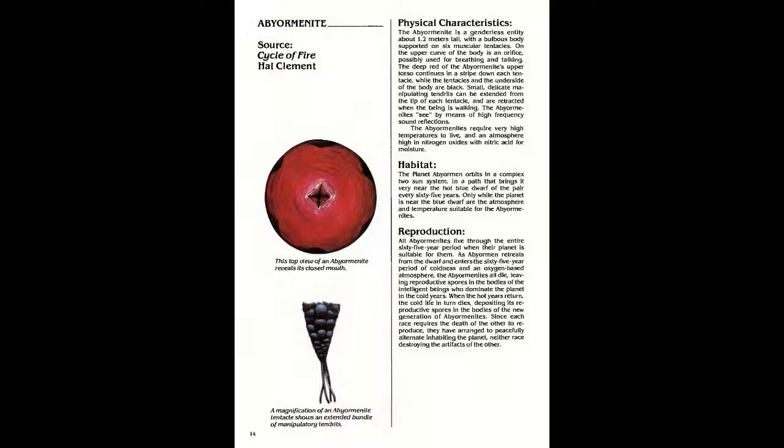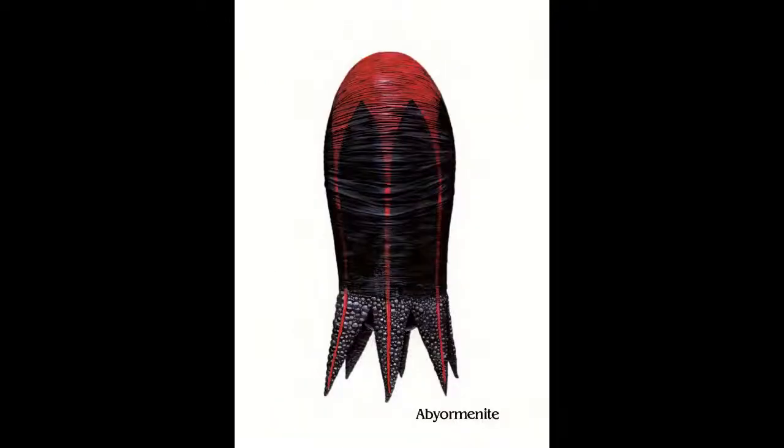On the upper curve of the body is an orifice, possibly used for breathing and talking. The deep red of the Abjormenite's upper torso continues in a stripe down each tentacle, while the tentacles and the underside of the body are black.